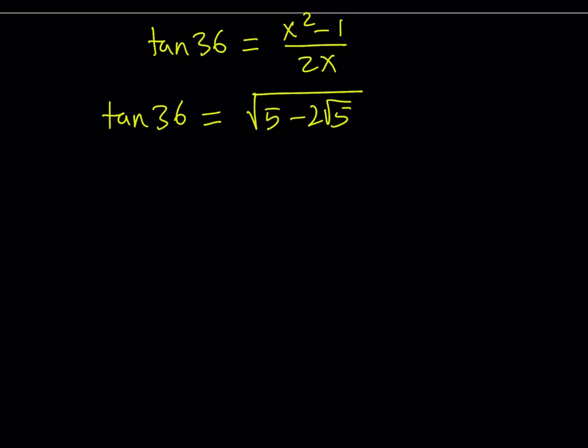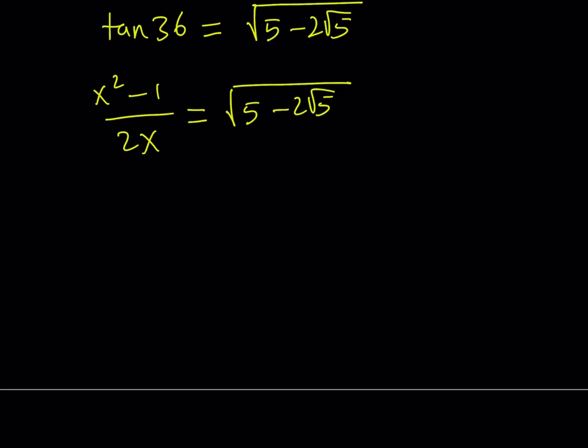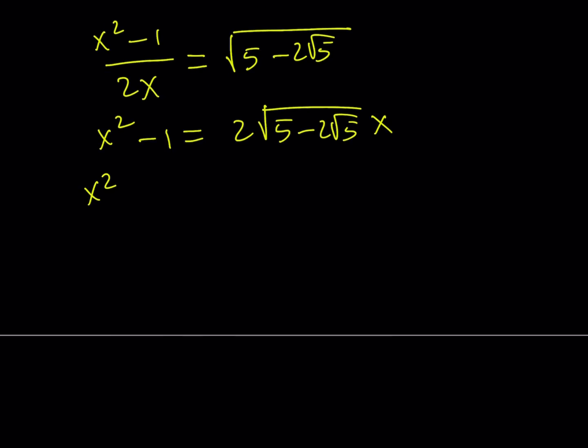Okay. So, since tangent 36 is equal to that, and I know that it's equal to this expression, I can just go ahead and set my algebraic expression equal to that. Since I know the value of tangent 36, I can solve for x from here. Let's go ahead and do the math. So, x squared minus 1 can be written as 2 times the square root of 5 minus 2 root 5 multiplied by x, and I'm putting everything on the same side, making it a quadratic, which coefficients aren't very nice, but don't worry, it's going to simplify nicely.